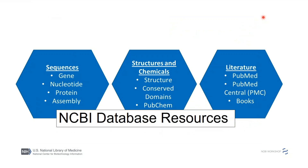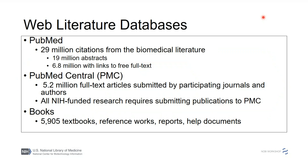Let's talk about the databases in a little more detail. For literature, PubMed gives free access to biomedical literature citations, with about 5 million available as full text in our PubMed Central database. In the United States, anyone funded by NIH must provide full text for publications, so those go into PubMed Central. We also have online textbooks and help manuals — about 6,000 reference works that everybody has free access to.